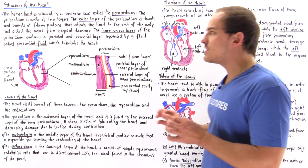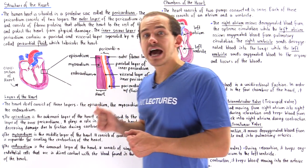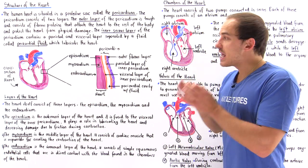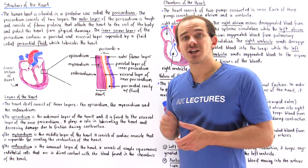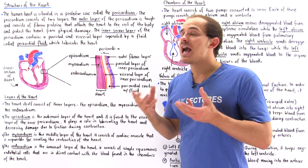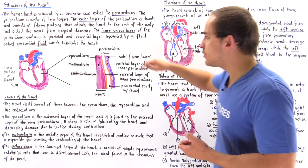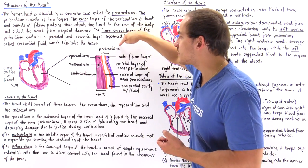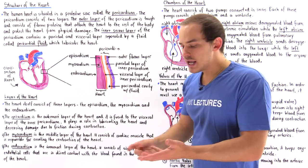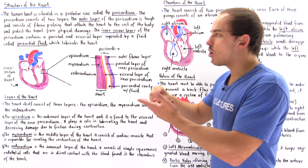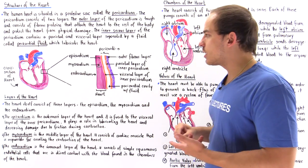The pericardial cavity contains the pericardial fluid, which lubricates our heart, decreasing the friction the heart feels every time it contracts. Together, the two layers of the pericardium protect the heart, attach it to other parts of the body, and lubricate the heart.